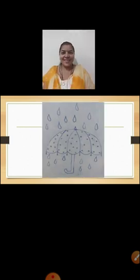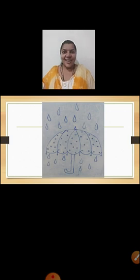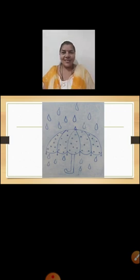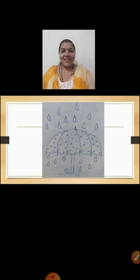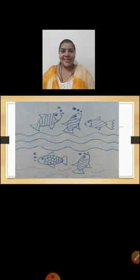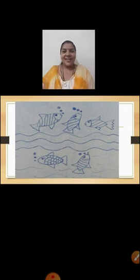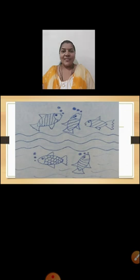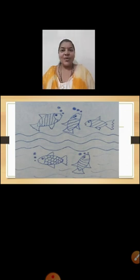Now children, what picture is this? Yes, it is an umbrella. And we can see here also raindrops. We can see some raindrops above the umbrella and we can see a few raindrops below the umbrella. Here we can see pictures of fishes and water also. We can see fishes above the water and also below the water.